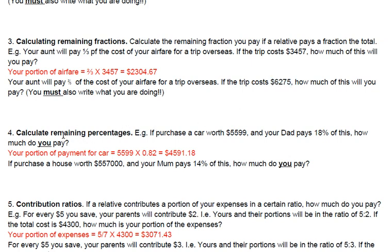Calculating remaining percentages, number 4. If you purchase a car worth $5,599 and your dad pays 18% of this, how much do you pay? Just like with fractions, work out the remaining percentage. If your dad pays 18%, your dad's percentage and your percentage must add up to 100%, so the remaining percentage is 82%. If you have a natural display calculator, you can enter 82% directly, using shift and the percentage symbol if needed.